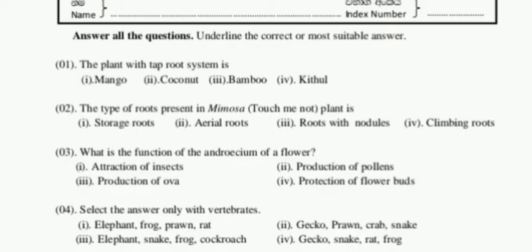That's why we can say roots with nodules is the suitable answer for mimosa. Examples for aerial roots: orchid. Examples for climbing roots: pepper and betel. Carrot and beans are examples for storage roots. That's why the third answer is suitable for question two.